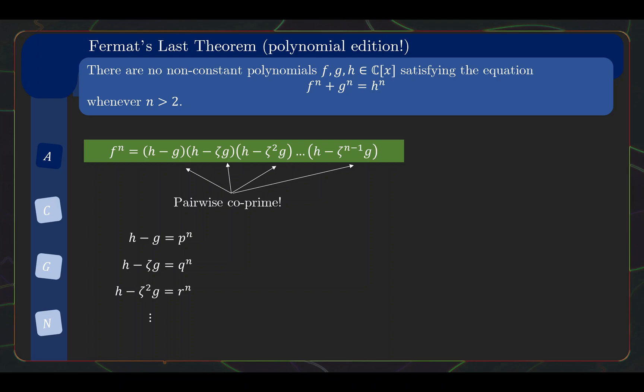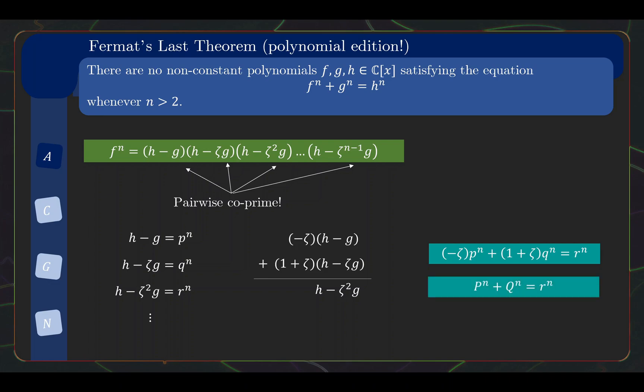Just the first three equations is enough to give us a contradiction. And by the way, this is where the n greater than 2 hypothesis is used. We need at least three equations here to give us a contradiction. So now if you take the linear combination of the first two equations as shown, the left-hand side will line up with the left-hand side of the third equation. This means that the same linear combination on the right-hand side of the equation will give us a relationship between p^n + q^n = r^n. You might see where this is going. We can actually take the coefficients, take the nth root and absorb them into the polynomials, giving us an expression that looks exactly like our Fermat's last theorem statement.